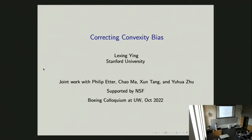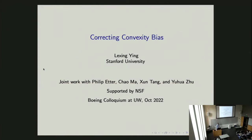This is joint work with a bunch of people. Phillip Etter was my PhD student who graduated last year and is now working in Seattle at the Meta Reality Lab. The second person is Chow Ma, who is right now a Zee Eagle Assistant Professor at Stanford University — he's done a lot of amazing work and is going to be on the job market this year. The third is Xiontao, my PhD student at Stanford. Finally, Yu Hua Zhu recently finished a postdoc at Stanford and moved on to UC San Diego as assistant professor. All the work here is supported by the National Science Foundation's computational math program.